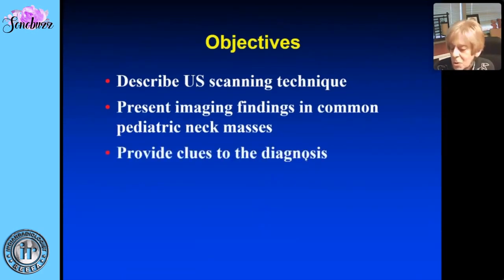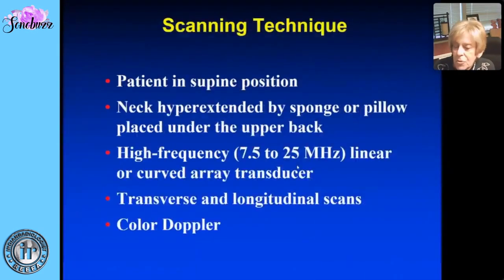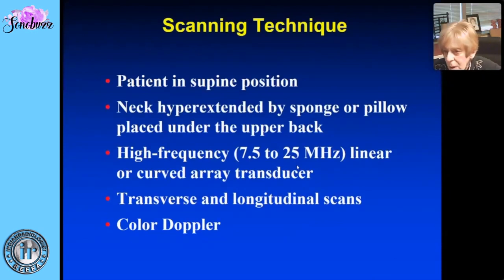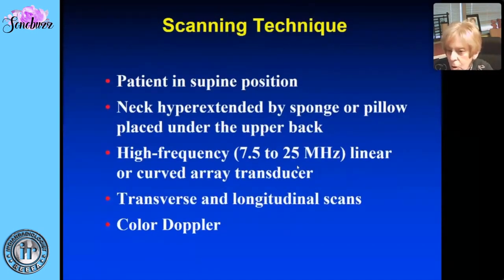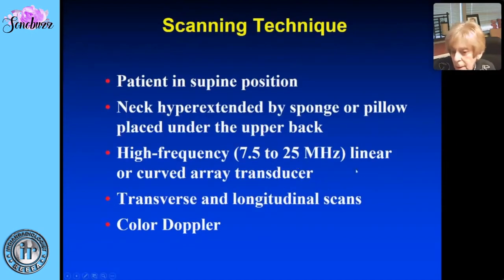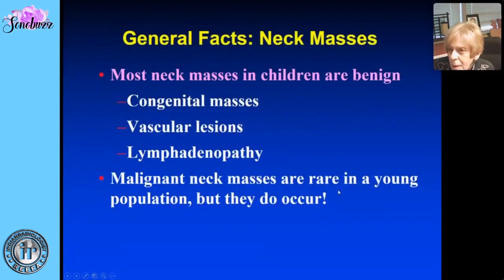The scanning technique is pretty straightforward. You put the patient in the supine position and hyperextend the neck by placing a sponge, pillow, or some object under the upper back. You want to use a high-frequency linear array or curved array transducer, because a lot of your structures are in the near field. You want transverse and longitudinal scans, and of course color Doppler.